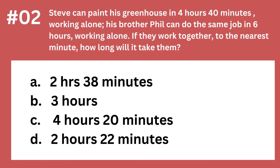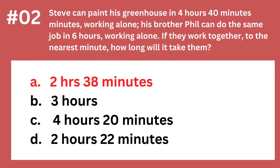Question 2: Steve can paint his greenhouse in 4 hours 40 minutes working alone. His brother Phil can do the same job in 6 hours working alone. If they work together, to the nearest minute, how long will it take them? Options: A. 2 hours 38 minutes, B. 3 hours, C. 4 hours 20 minutes, D. 2 hours 22 minutes. The answer is A, 2 hours 38 minutes.